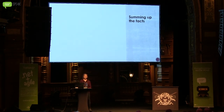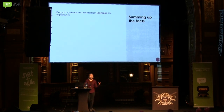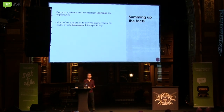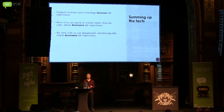Let's sum up the facts so far. We know that the support systems and technology surrounding our code help increase life expectancy. At the same time, having 10-year-old production code increases your belief that the code you're currently writing will survive. We know that most of us are quick to rewrite rather than fix code — and that decreases life expectancy. We view code as our playground, introducing risk, which also decreases life expectancy. And your definition of legacy impacts the life expectancy of the code you're writing. This is why I believe the overall life expectancy of code is decreasing.